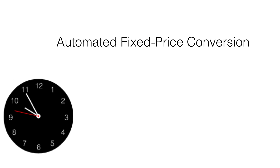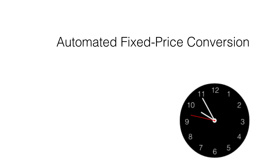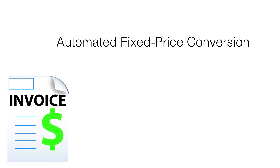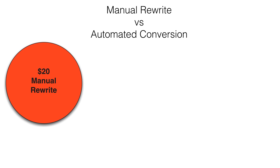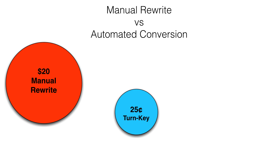If you're considering a conversion project, you might wonder why should I hire .com Solutions Incorporated instead of using FMPro Migrator Platinum Edition. The cost of performing an automated fixed price conversion is only about 1% of the cost of a manual rewrite. $20 represents the industry average cost per line of code to manually rewrite an application.